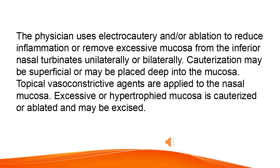The physician uses electrocautery and/or ablation to reduce inflammation or remove excessive mucosa from the inferior nasal turbinates unilaterally or bilaterally. Cauterization may be superficial or may be placed deep into the mucosa. Topical vasoconstrictive agents are applied to the nasal mucosa. Excessive or hypertrophied mucosa is cauterized or ablated and may be excised.